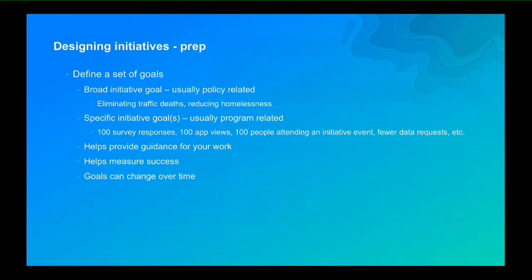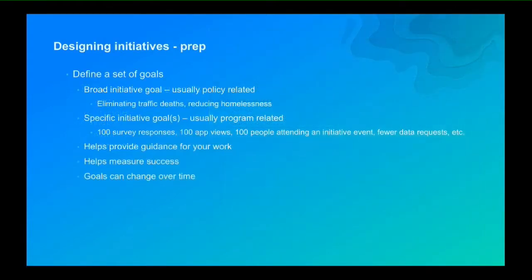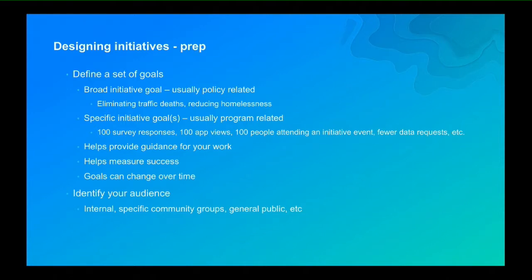We want to be SMART about goals. For South Bend, they had a vacant lots initiative — even before working with Hub, they had this goal: 1,000 houses in 1,000 days. South Bend has a lot of vacant lots and they wanted to get rid of or reimagine 1,000 of them. This is specific, measurable, attainable, relevant, and time-oriented — it's SMART. And it's good to think about that it's not just huge cities like LA doing this work. South Bend, Indiana is pretty small, so we can imagine doing similar things in smaller cities.